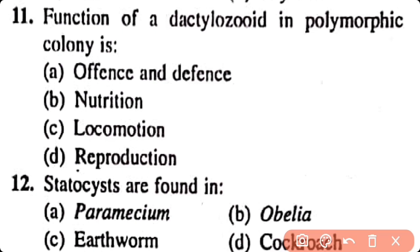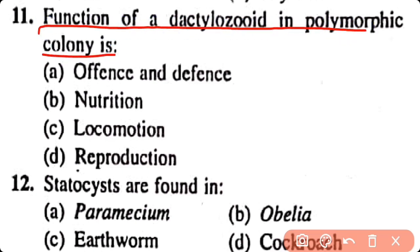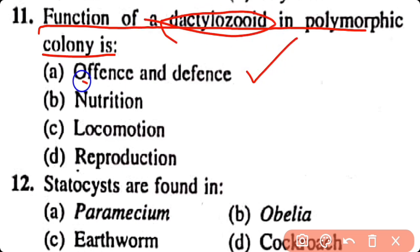Question number 11. The function of a dactylozooid in a polymorphic colony is: offense and defense, nutrition, locomotion, reproduction. Correct answer is option A. The function of dactylozooids in a polymorphic colony is offense as well as defense.